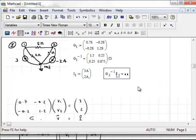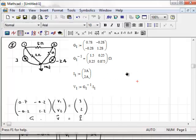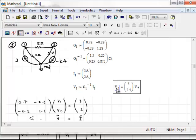Now, let me undo this. Control-Z. I'm going to select this. Do Control-C to copy. And then I'm going to come down here and define V sub 1 colon, and I'm going to paste this. I'll delete this, and now I can say V sub 1, and I'll use the equal sign, and I get 5 and 2.5. So that's how you can solve a system of linear equations using MathCad.